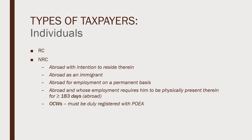Let's have an overview of the types of taxpayers: individuals, corporations, partnerships, and estates and trusts. For individual taxpayers, we have five main categories. First, resident citizens (RC) and non-resident citizens (NRC). NRCs are those abroad with intention to reside therein, those abroad as immigrants, those abroad for employment on a permanent basis, those whose employment requires physical presence abroad for at least 183 days, and overseas contract workers duly registered with POEA. I easily remember NRC by thinking of them as OFWs.